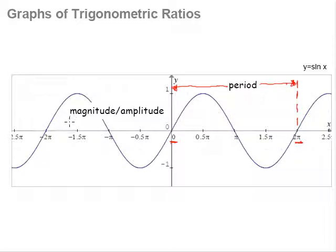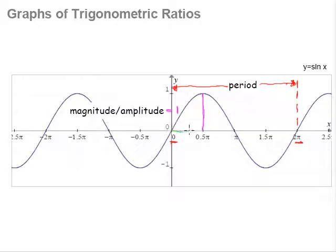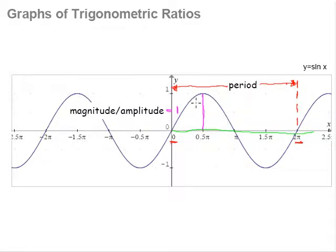The next thing to draw attention to is the amplitude. The amplitude refers to the distance between the highest point of the curve to the middle of the curve. In this case, the middle of the curve is the x-axis, so the amplitude will be this vertical height here, which is 1. This is very important because later on, we are going to shift the curve upwards, downwards, left, right, and we need to know exactly where the amplitude is.